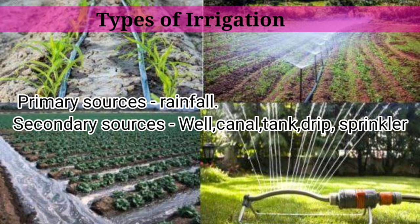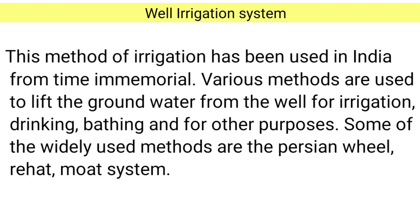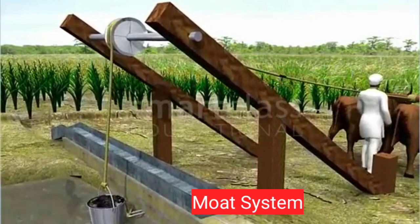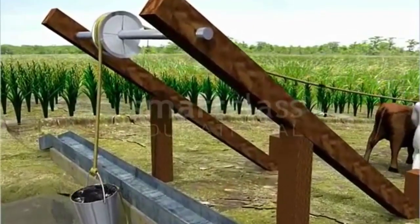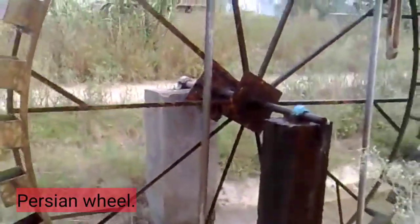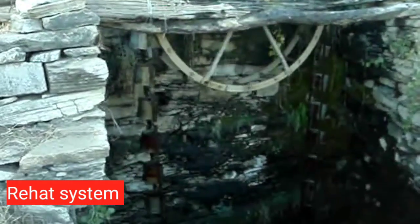Types of irrigation: primary source is rainfall; secondary sources include well, canal, tank, drip, and sprinkler irrigation. Well irrigation is a hole dug in the ground up to a depth of 5 meters or deeper — up to 15 meters. It is a very old traditional method in India. Ways to lift water from a well include the Mode system, where a pulley is fixed to the bucket. Other systems include the Persian wheel and the Rehat system, which is a Persian wheel driven by animal power.